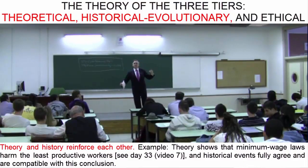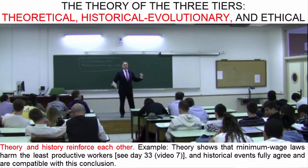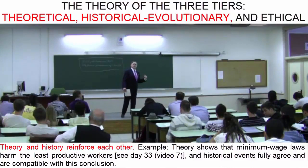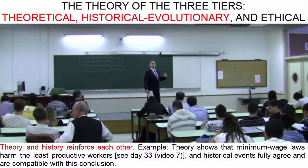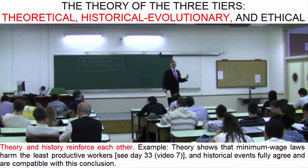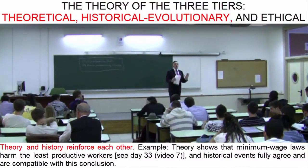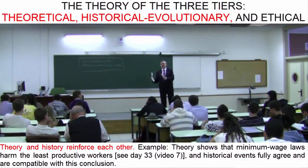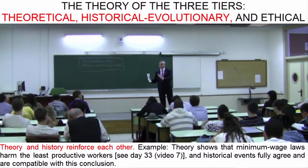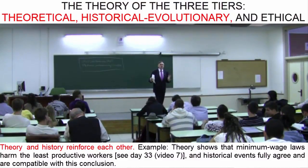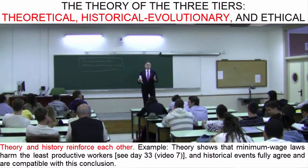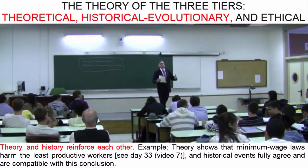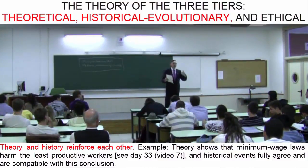For instance, other things being equal, minimum wage laws always cause unemployment and a misallocation of resources, and they hurt workers, especially the least qualified — those they are intended to benefit. This is what economic science and theory indicate. But study on the second level, the historical or evolutionary level, appears to lead to the same conclusions in many cases.